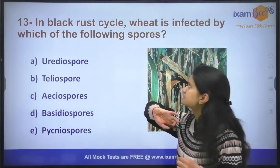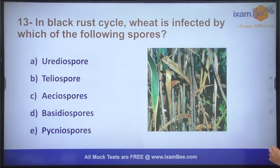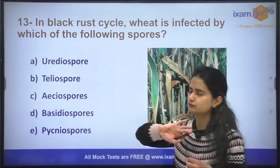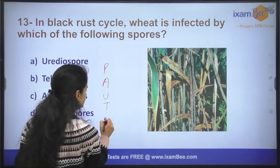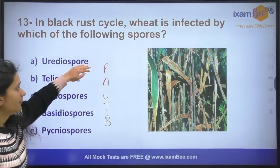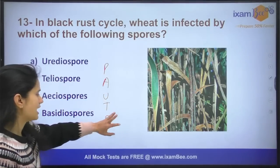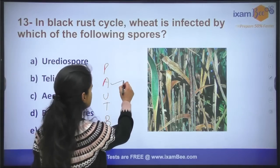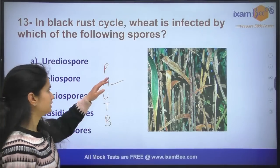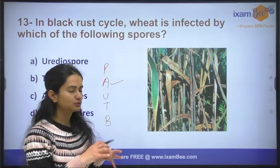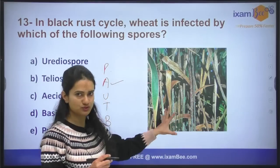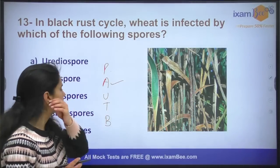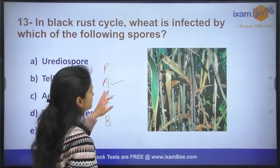Question number thirteen: in the black rust cycle, wheat is infected by which of the following spores? There are five types of spores: pycniospore, aeciospore, uredospore, teliospore, and basidiospore. Out of these, the aeciospore is the one which infects wheat. Pycniospore and aeciospore are both from the alternate host and they come to the main host, which is wheat, to infect it. The uredospore and teliospore stages occur on wheat.